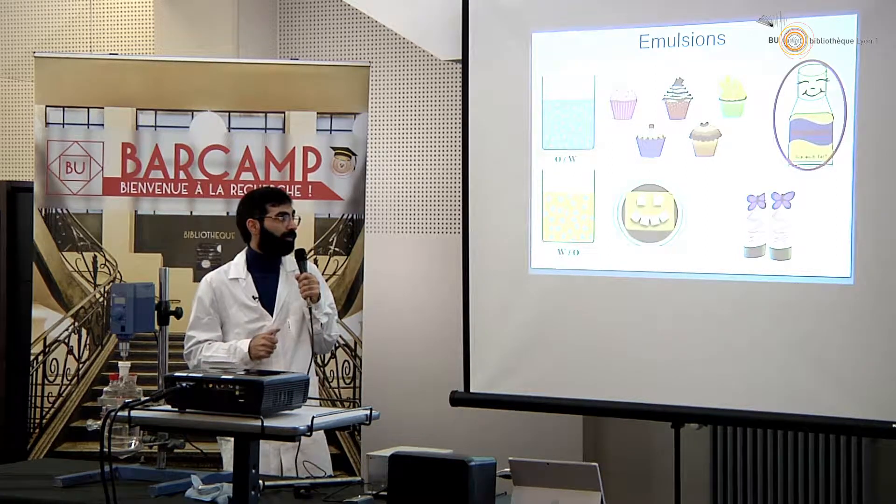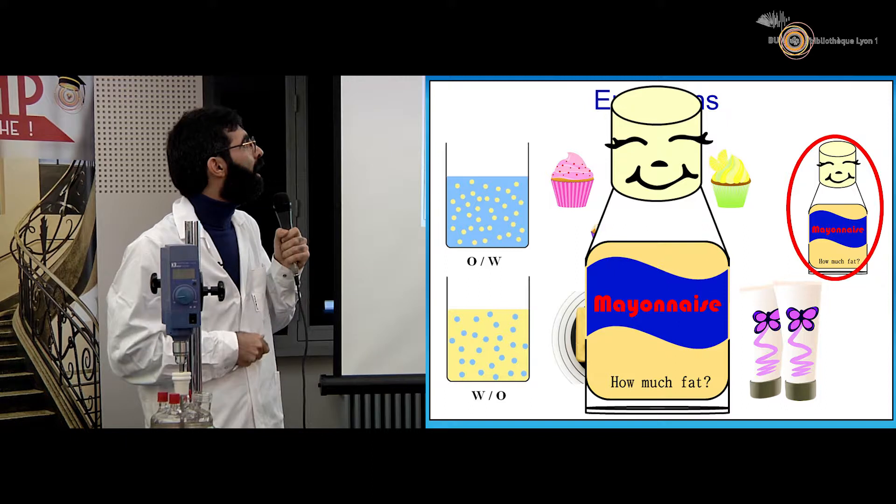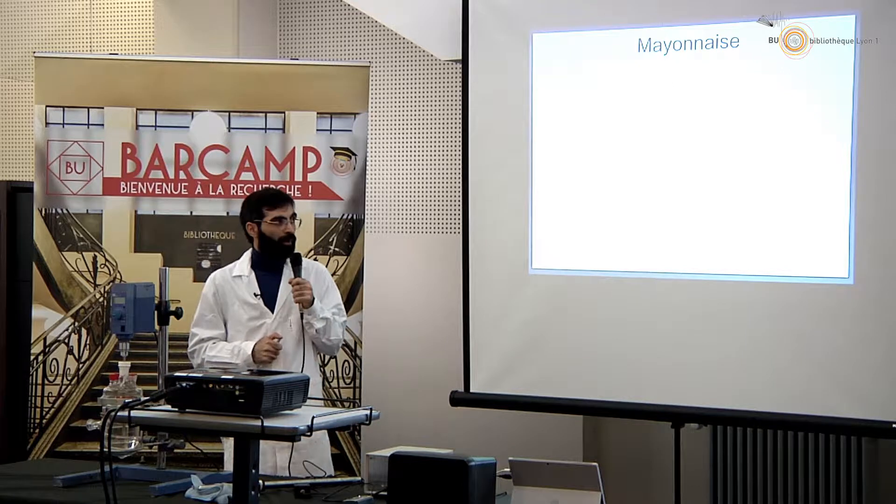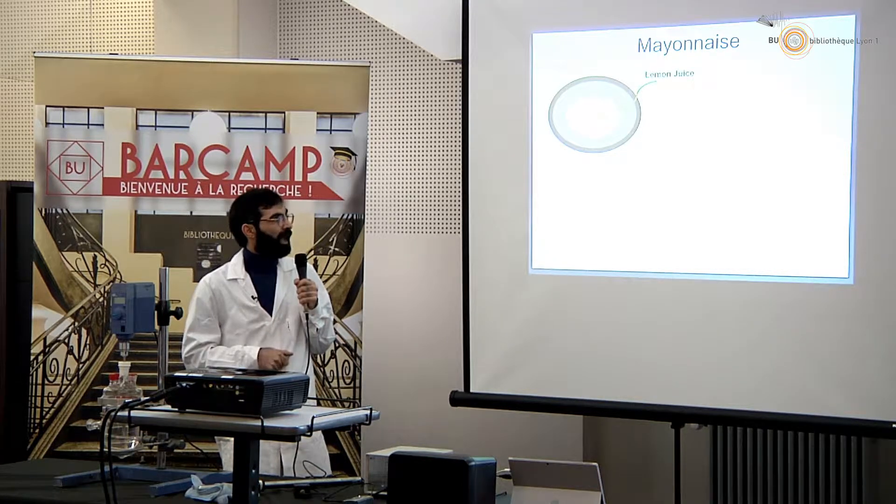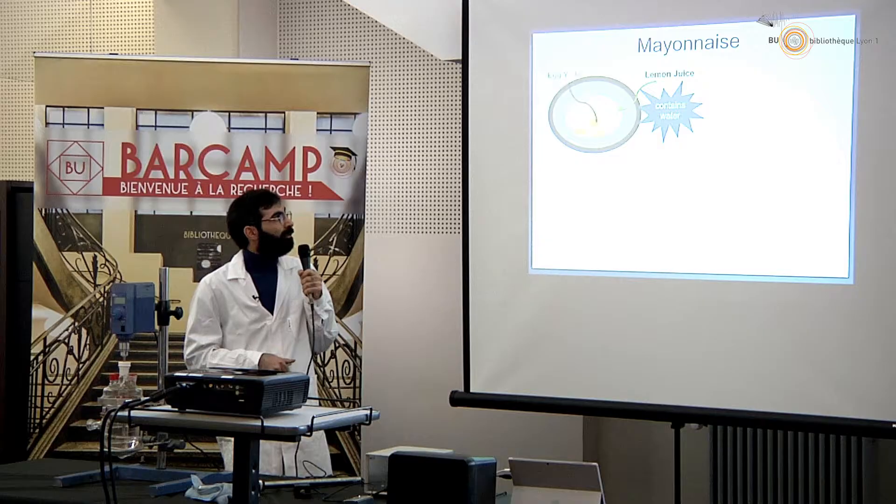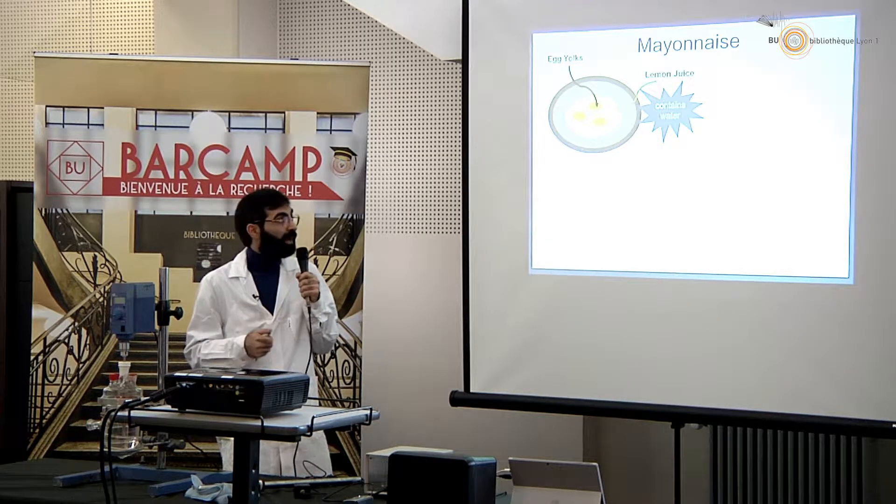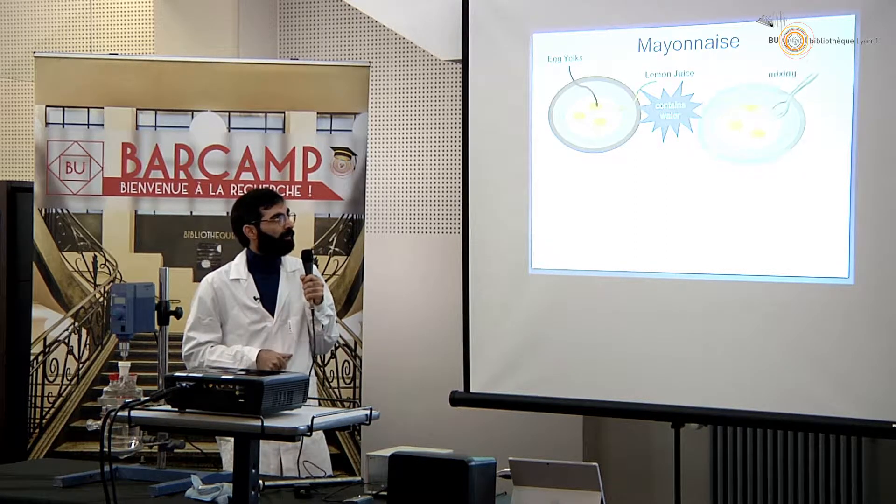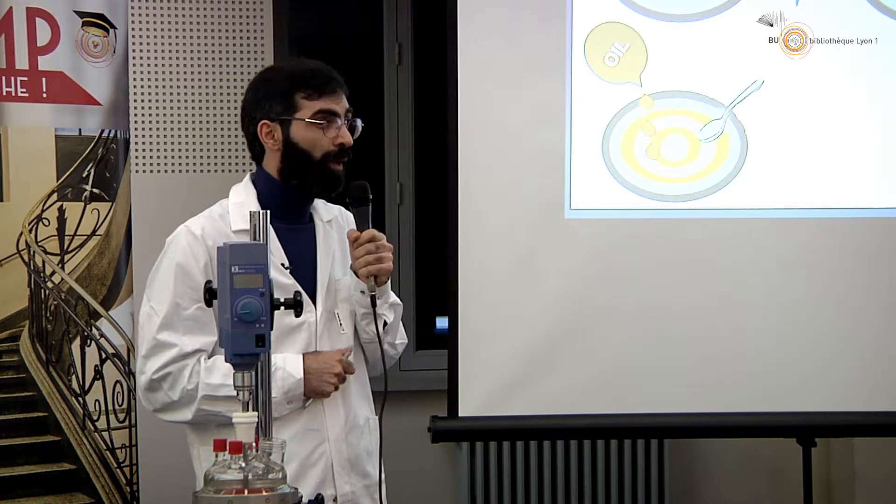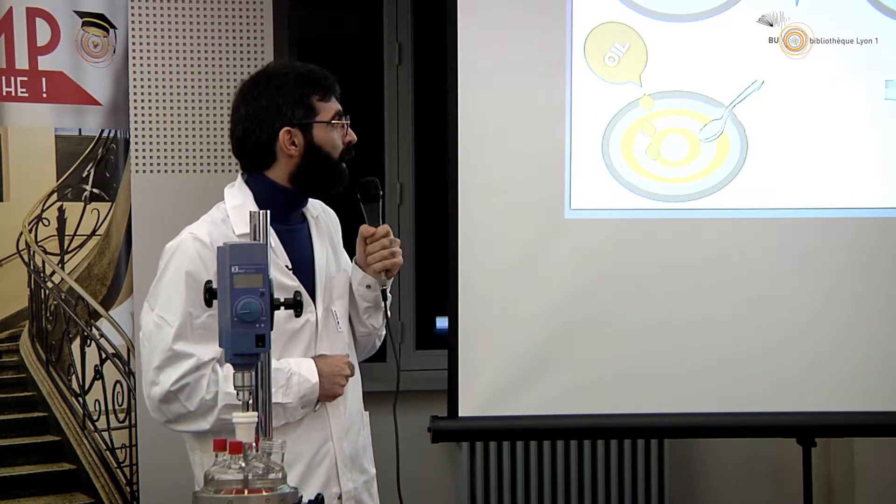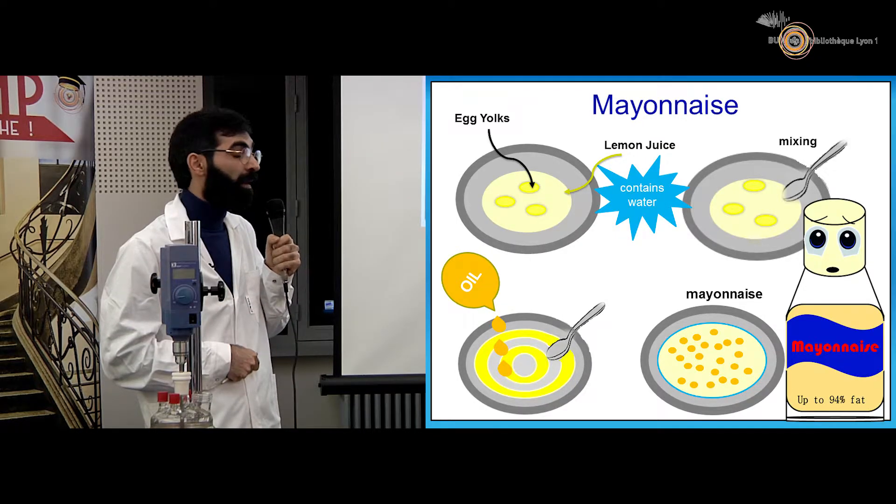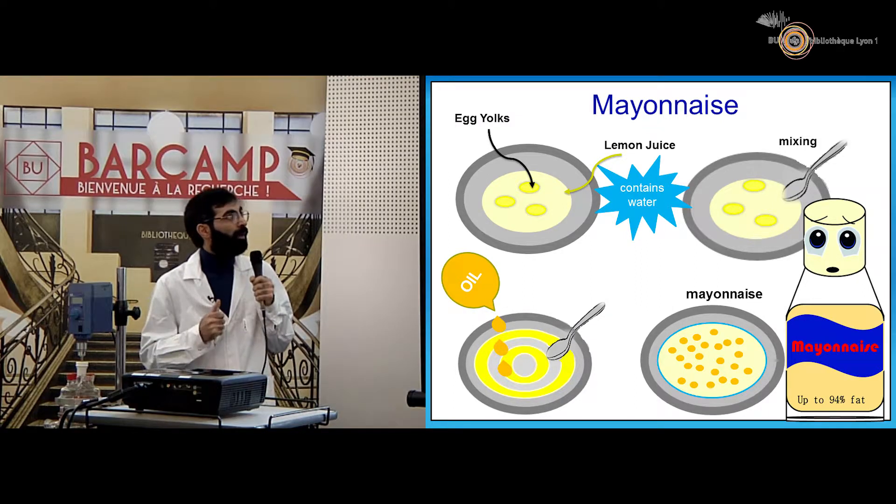Let's take the example of mayonnaise which is well known for all of us. If we want to make mayonnaise at home we will take a plate, add some lemon juice which contains water, then add some egg yolks which play the role of emulsifier. Then we will mix it. At the same time we will add the droplets of oil slowly. So we will make mayonnaise. But this mayonnaise is sad because it has up to 94% of fat.